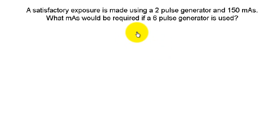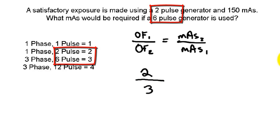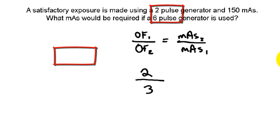Alright, so the formula is output factor 1 over output factor 2 equals mAs 2 over mAs 1. Output factor 1, it's a 2 pulse generator, so single phase 1 pulse was 1, single phase 2 pulse output factor was 2. And then over output factor 2, this was a 6 pulse generator, so that was 3.